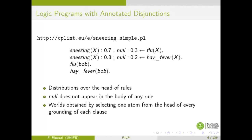From this program you obtain worlds by first generating the grounding — replacing variables with constants in all possible ways. In this case we have a single constant and a single variable, so we get one ground clause from each of the first two clauses. These ground clauses have alternatives in the head. Worlds are generated by picking for each ground clause one of the atoms in the head, and including in the world the resulting non-probabilistic clause. You assign probability to worlds by multiplying the probabilities of the choices made — for example, 0.7 times 0.8.